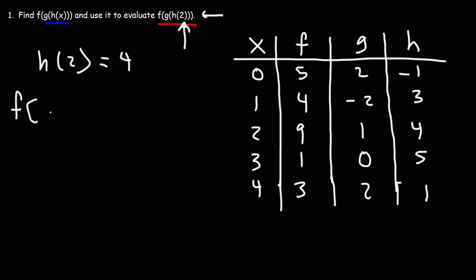So we have f of g of h of 2. So now we can replace h of 2 with 4. So we have g of 4. So now g and 4, they intersect at 2. So g of 4 is 2.